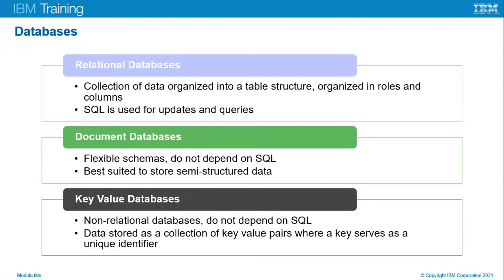Next, we have key-value databases. These are non-relational databases that do not depend on SQL. The data stored is a collection of key-value pairs, where a key serves as a unique identifier. Common use cases for key-value data pairs include leaderboards, caches, and shopping cart data.